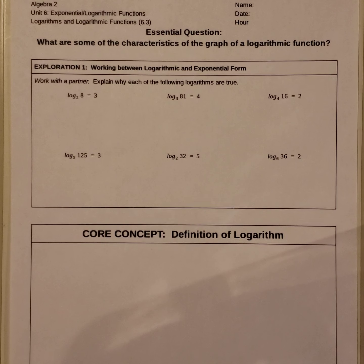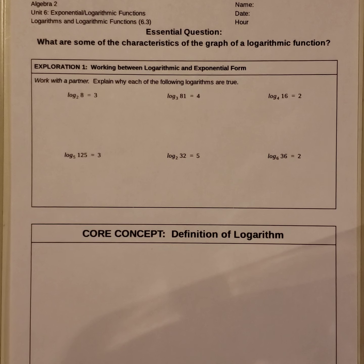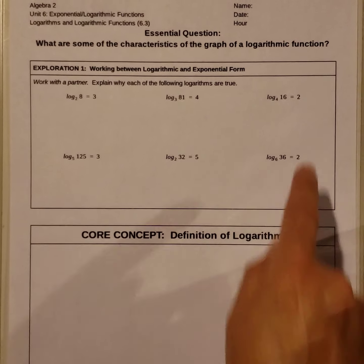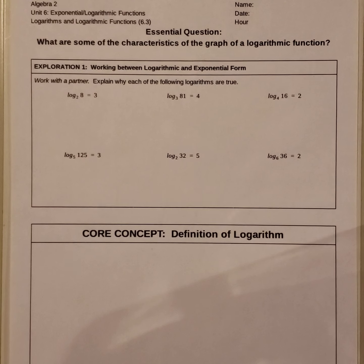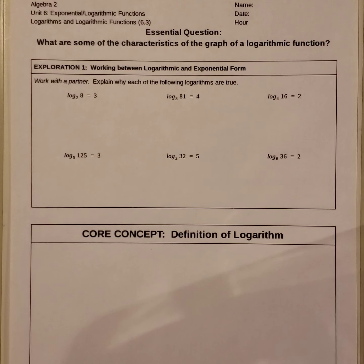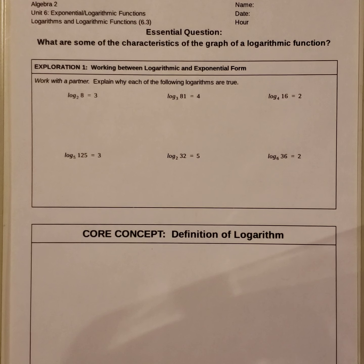Exploration 1 states: working between logarithmic and exponential form. Explain why each of the following logarithms are true. Looking at these values, how could you possibly use the values that are given to you and set them up in a true statement using exponents?